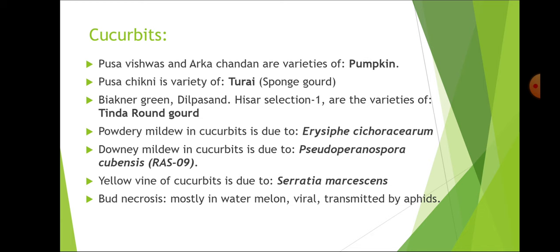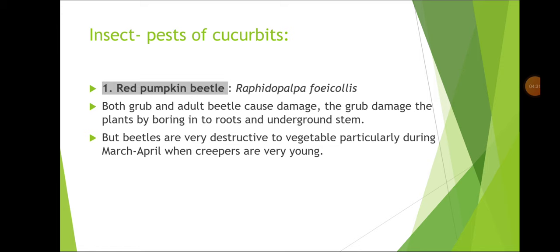The next crop group is cucurbits. Many crops are present in the Cucurbitaceae family and a lot of sex forms are also present in cucurbits, including Monoecious, Androecious, Gynoecious, Andromonoecious, Gynomonoecious, Hermaphrodite and Dioecious.